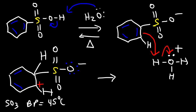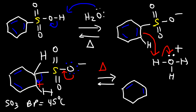Adding heat to this step, the oxygen with the negative charge uses one of its lone pairs to form a pi bond, causing the carbon-sulfur bond to break. Those electrons are used to form the pi bond, making the ring aromatic again. The sulfur group is gone and we have the three double bonds of the benzene ring restored. SO₃ is produced as a side product, and because the solution has been heated, it escapes as a gas, thus driving the reaction to the right. And that is the desulfonation mechanism of benzene sulfonic acid.